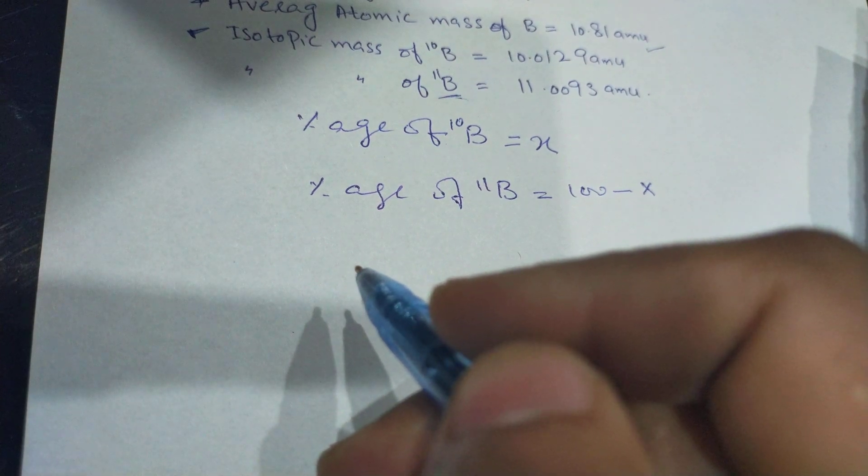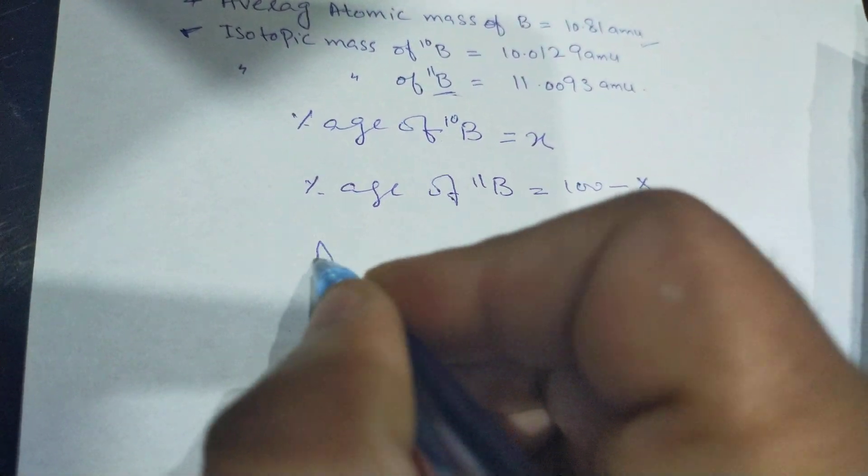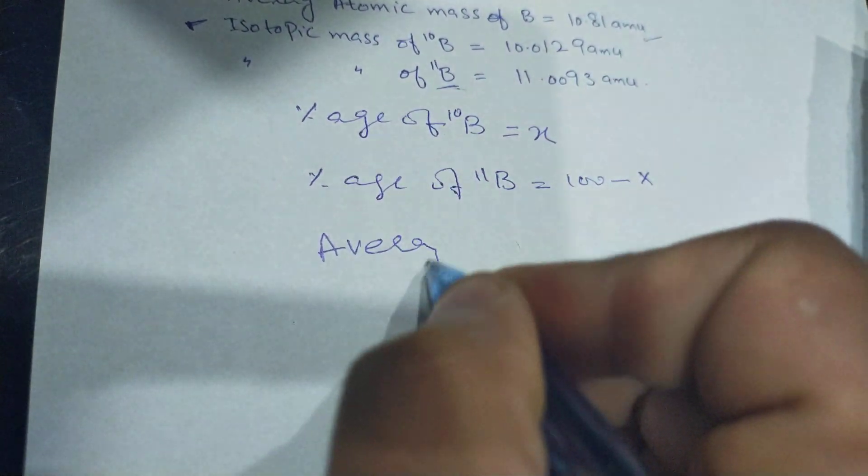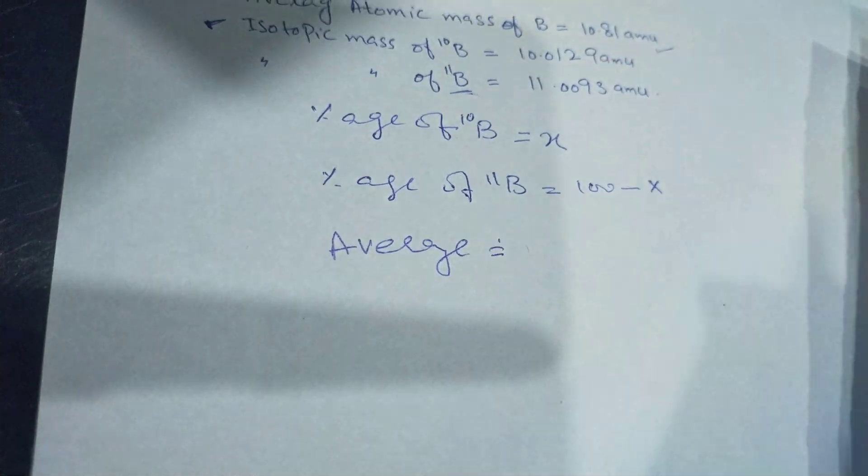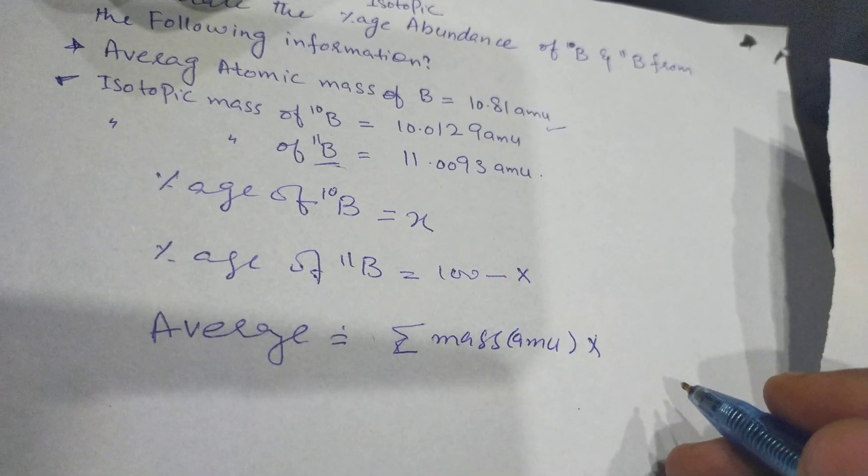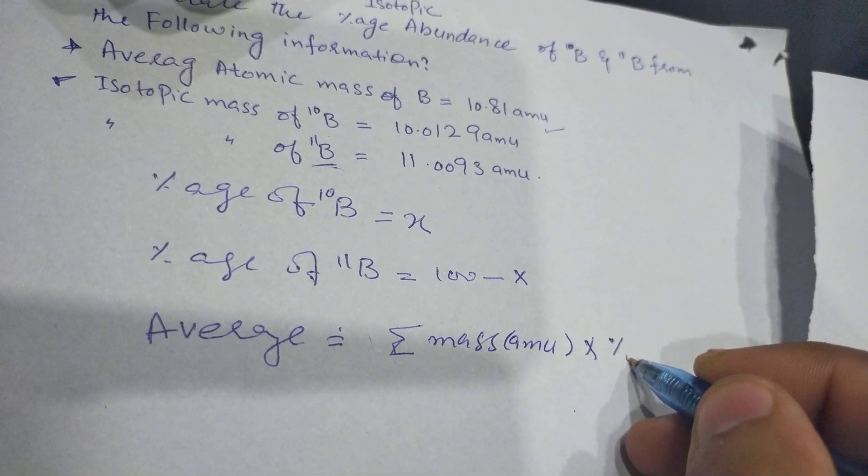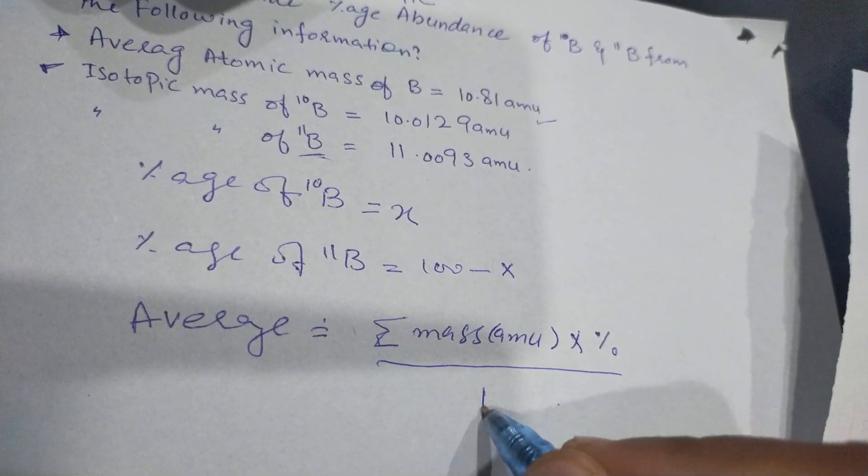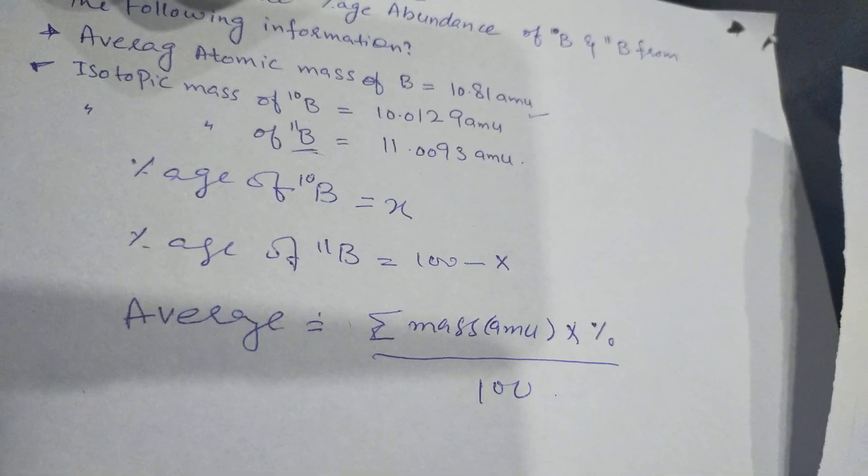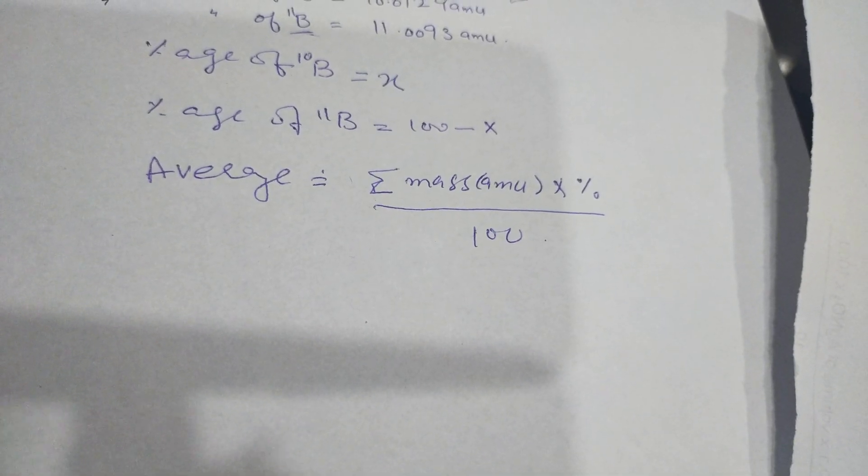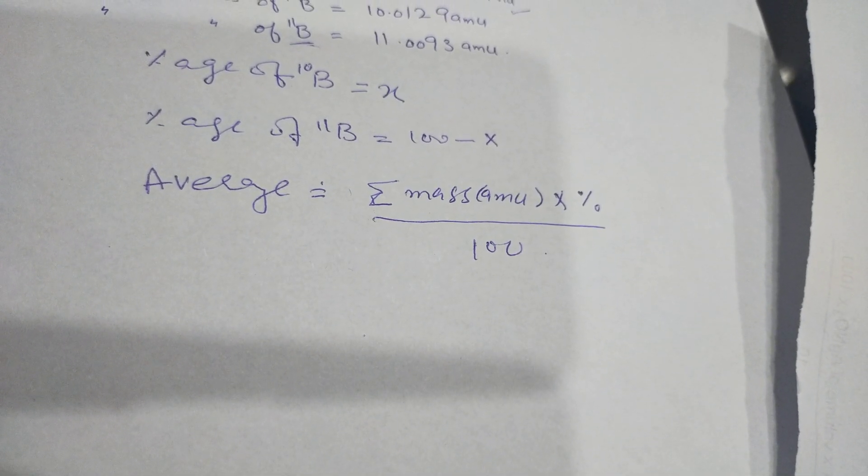If we want to calculate the Average Atomic Mass, average is equal to sum of mass (AMU) multiply by percentage and divided by 100. By putting the values in the formula we will get: